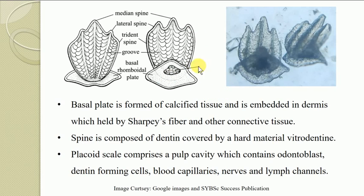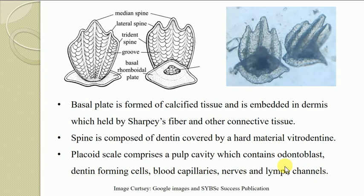The spine of the placoid scale is composed of dentine covered by a hard material referred to as vitrodentine. It is partly dermal and partly epidermal in origin. The placoid scale comprises a pulp cavity — unlike cycloid and ctenoid scales where the pulp cavity is absent. This pulp cavity contains odontoblasts, dentine-forming cells, blood capillaries, nerves and lymph channels. This scale consisting of the trident spine and basal plate is the characteristic feature of elasmobranch fishes.